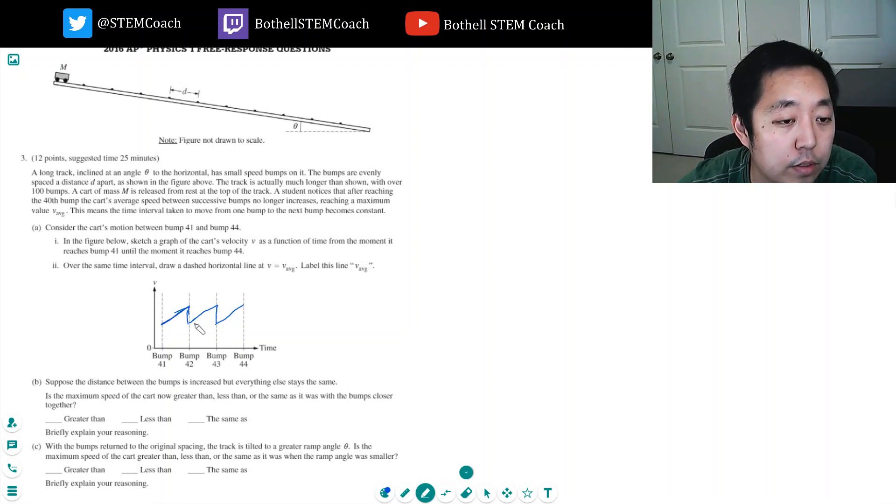And these should be straight lines. Why straight and why is that important? It's under constant acceleration. And then v average, it's kind of like that v average.